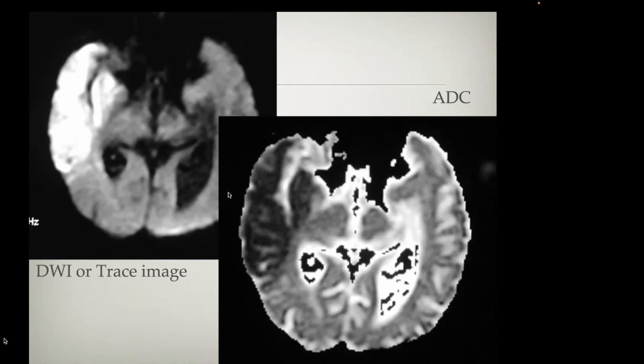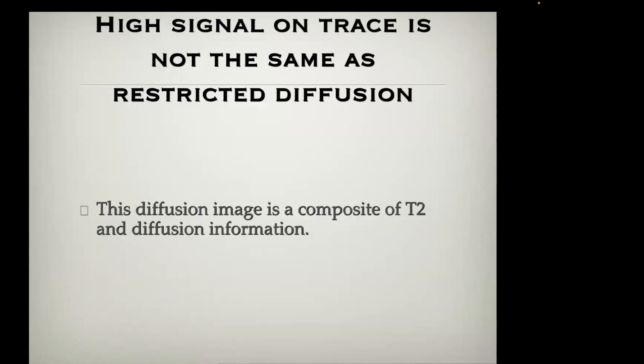The ventricle appears dark on the diffusion-weighted scan because of the free movement of water — very little signal is recovered between the two gradients. This area is low signal on the trace image but high signal on the ADC map — that is called facilitated diffusion. I caution you: just because something is high signal intensity on the trace image is not the same as having true restricted diffusion, because the diffusion image is a composite of both T2 and diffusion contrast.